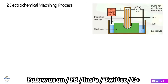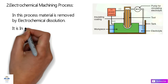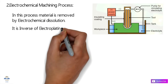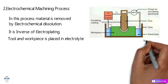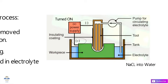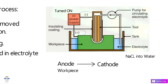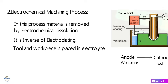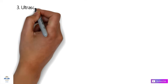The second process is Electrochemical Machining, where metal is removed by electrochemical dissolution. This process is essentially the inverse of electroplating. The tool and workpiece are placed in an electrolyte solution, which can be brine or NaCl in water. The tool acts as a cathode and the workpiece acts as an anode. When DC power is supplied, ions from the anode get deposited on the cathode, so metal is effectively transferred from the workpiece to the tool.